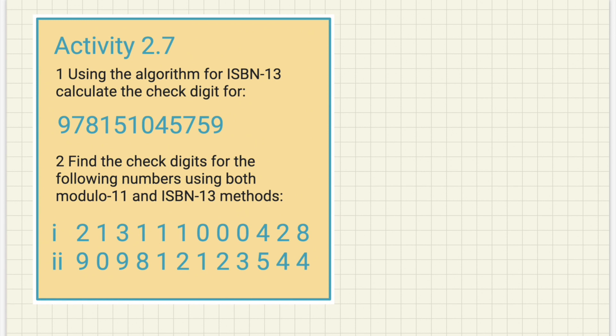In topic two, data transmission, we've got to cover something called check digits and in particular two different types of check digits. These are modulo-11 and ISBN-13. We've got a couple of activities here. In the book it's activity 2.7 and number one, using the algorithm for ISBN-13, calculate the check digit for a number. For question two, we're going to use both ISBN-13 and modulo-11 on these two numbers here to check what the end digit is or the check digit. It's usually the last digit that is sent with a packet of data.